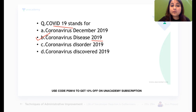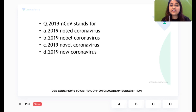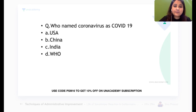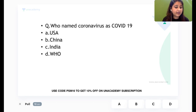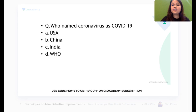2019-nCoV stands for 2019 Novel Coronavirus. From a PSM point of view, who named the coronavirus as COVID-19? The authority that has the power to name diseases is the WHO. This is something everyone should get correct — 86–87% of you got it right.